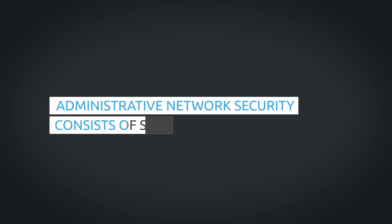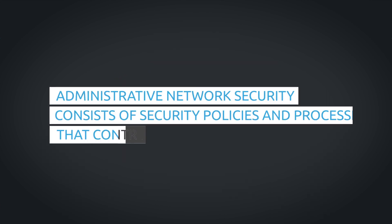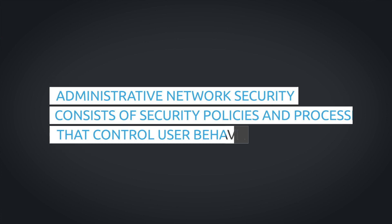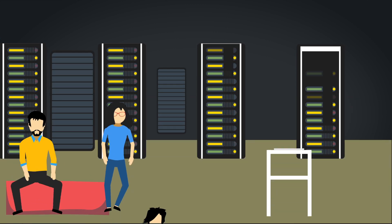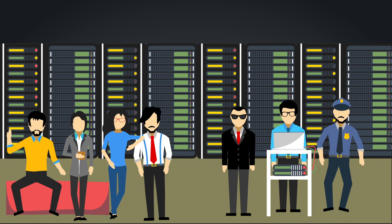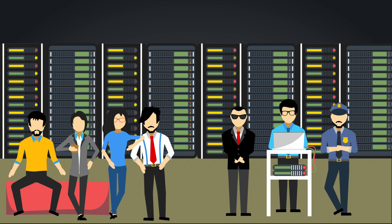Administrative network security consists of security policies and processes that control user behavior, including how the user is authenticated to the network, their level of access on the network, and how IT staff members implement changes to the infrastructure.